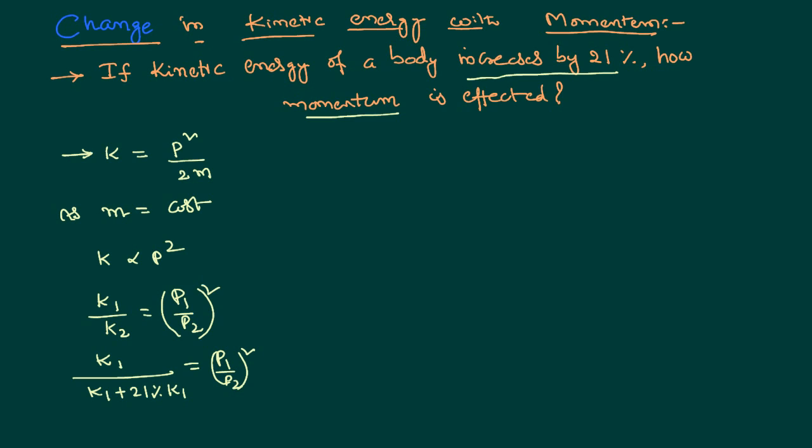By simplifying this we can write k1 by k1. Any percentage whenever you want to convert into number you shall divide with the 100 equal to p1 by p2 whole square.